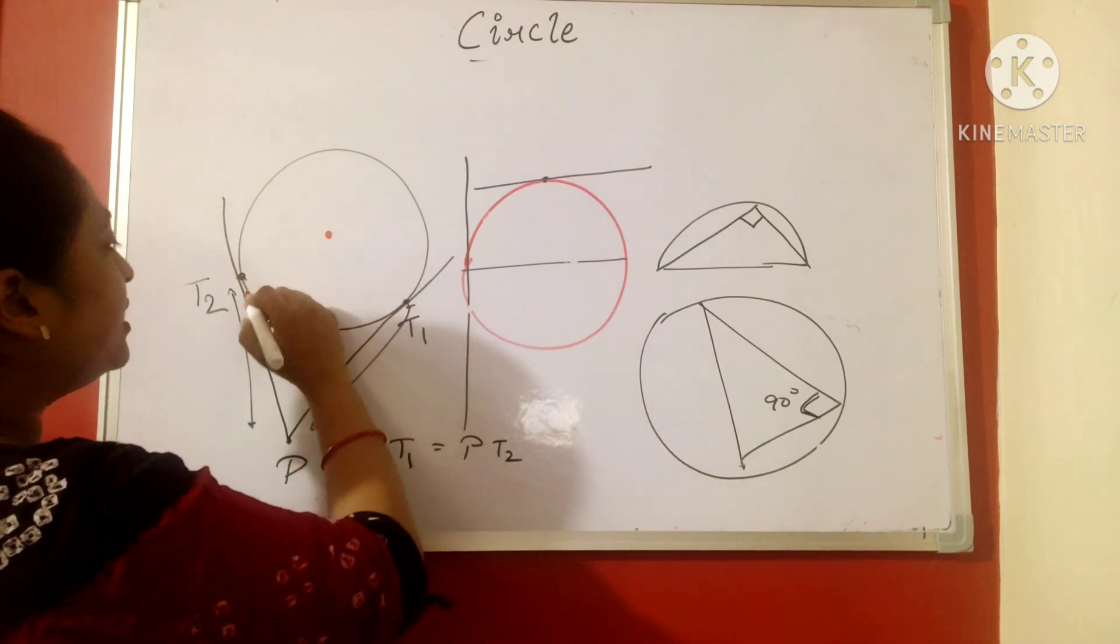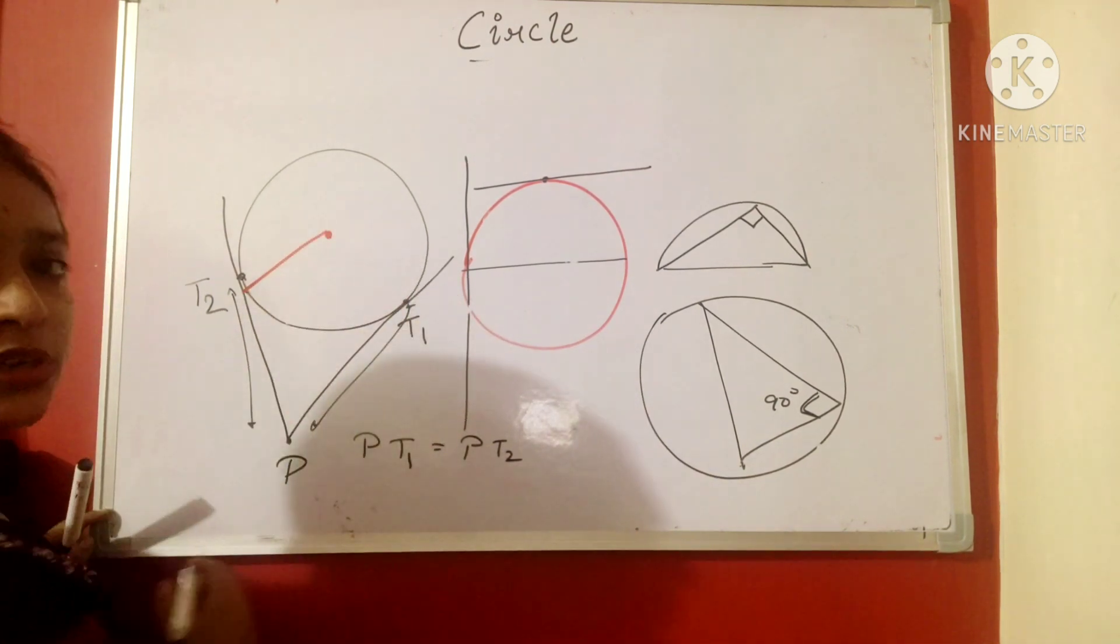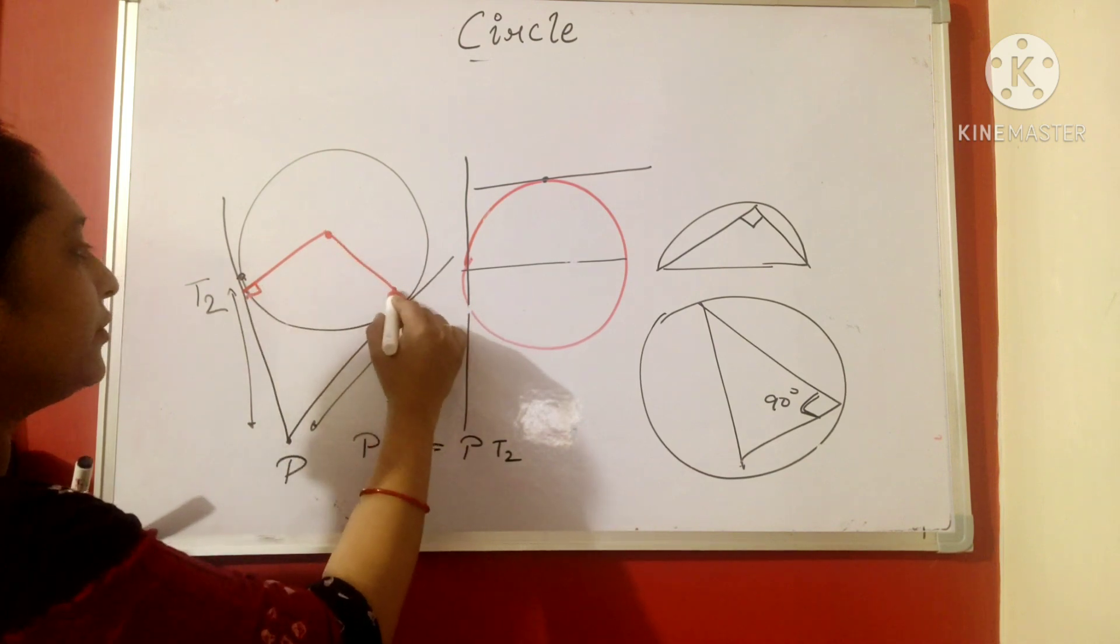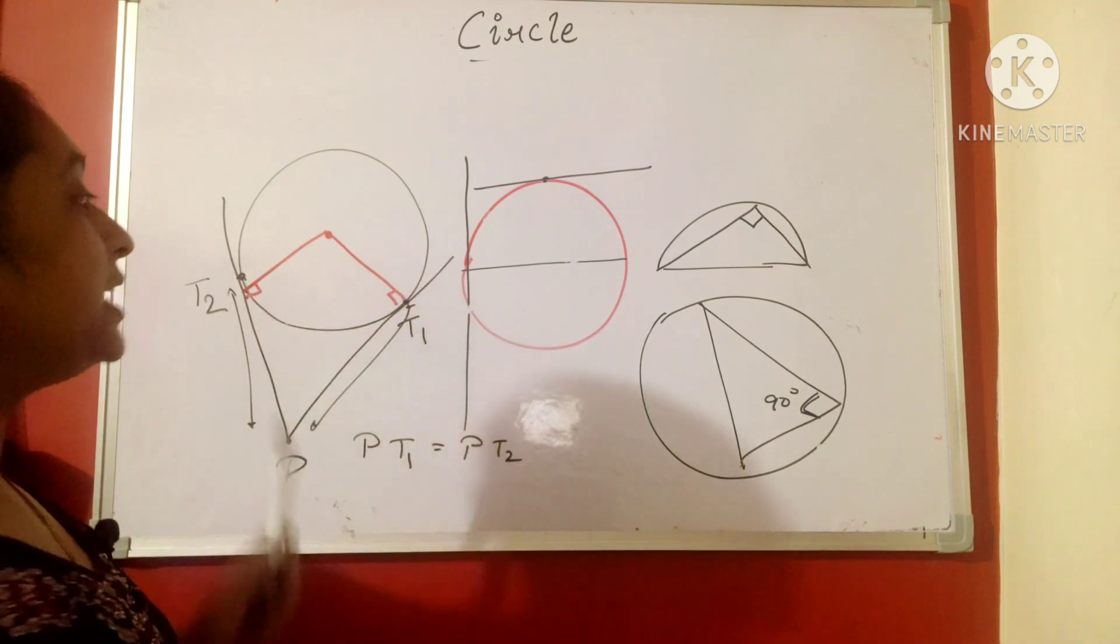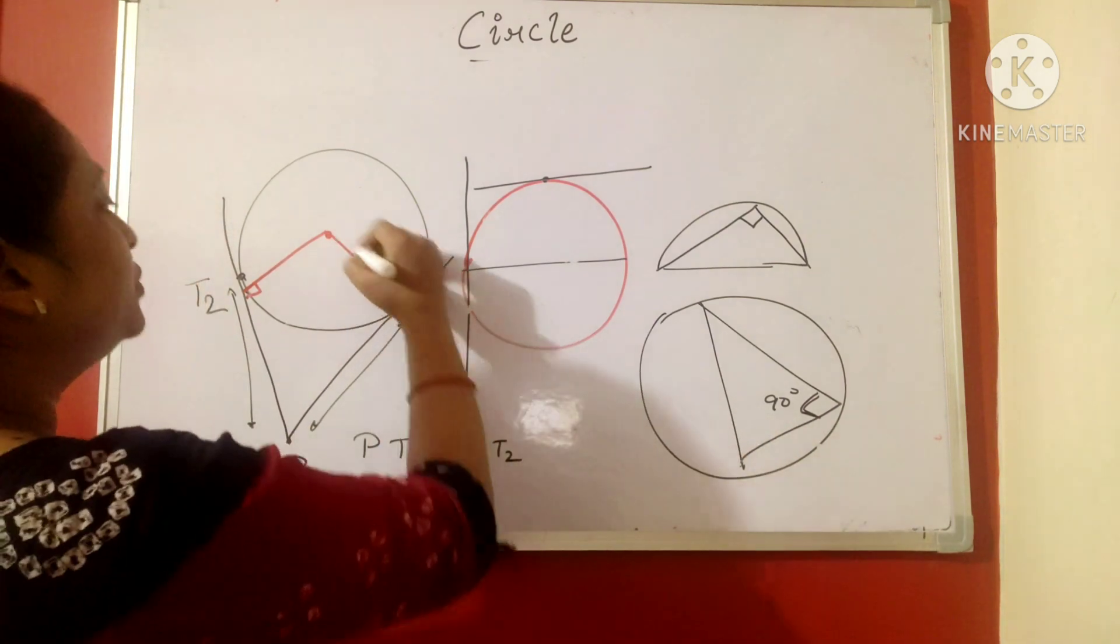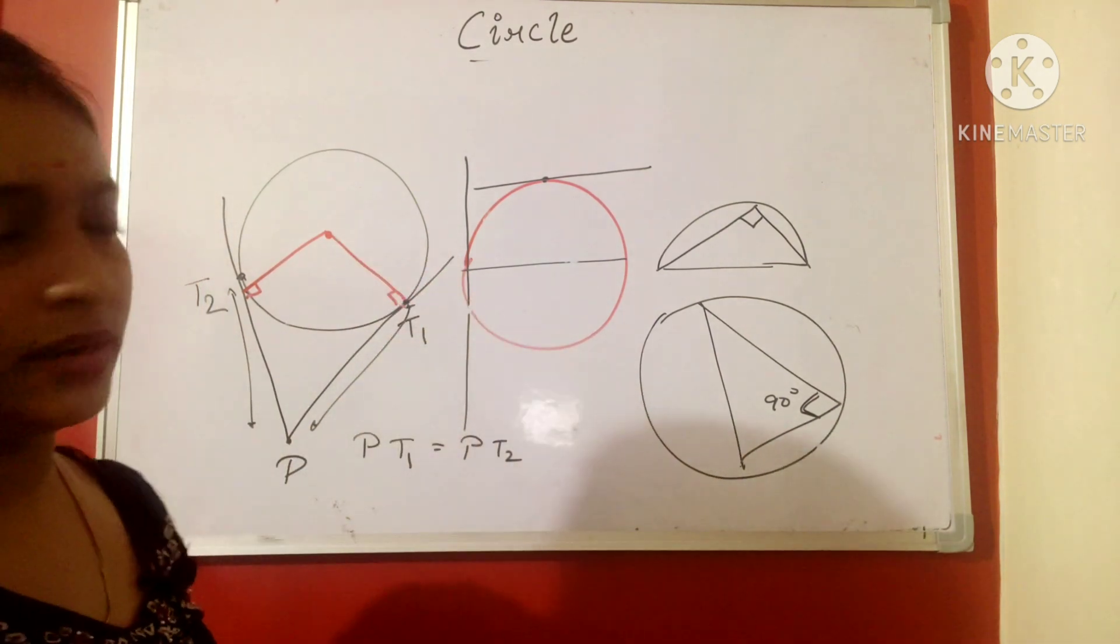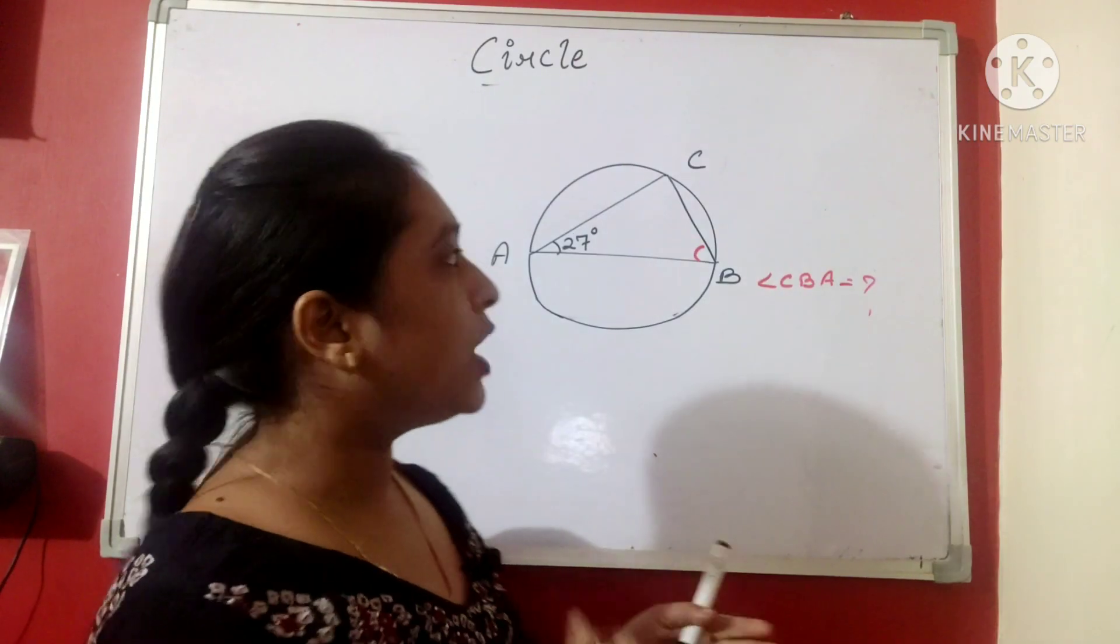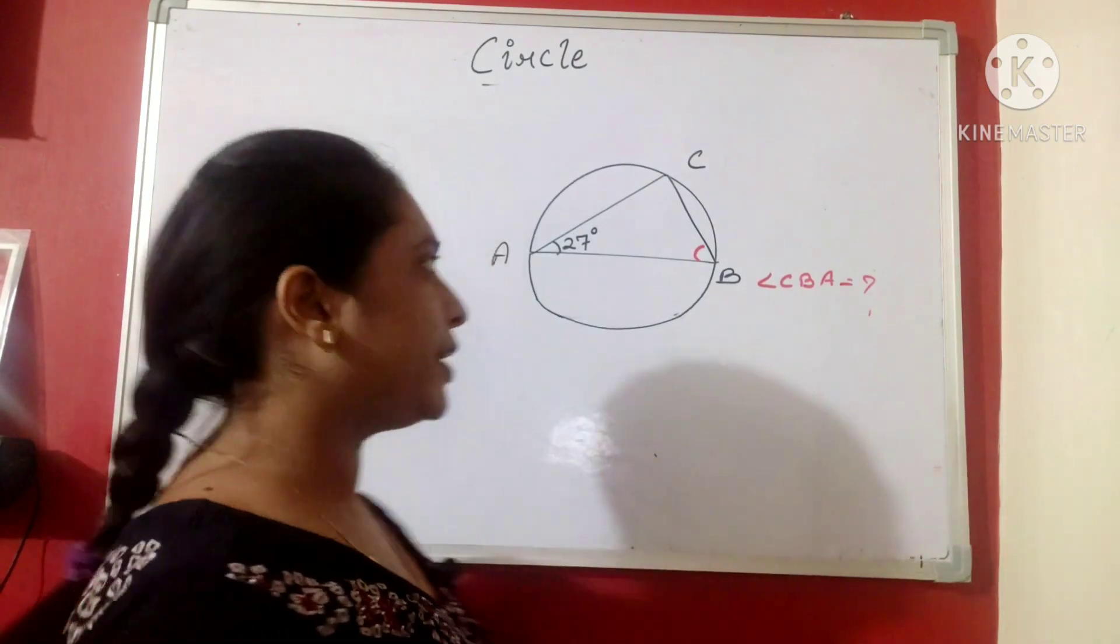And when the radius of the circle touches this point, it makes 90 degree. That is, the tangent is perpendicular to the radius of the circle. This is the another property of the circle. Now, let's see how we use these properties in the question.